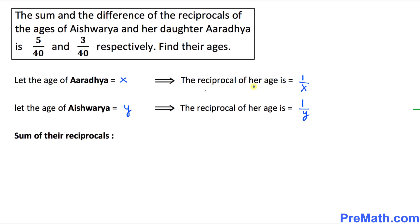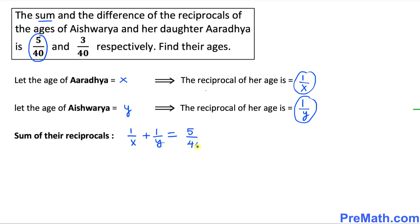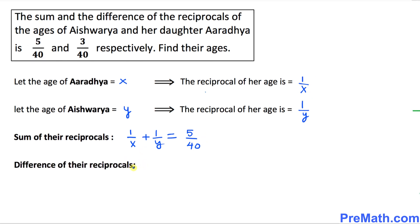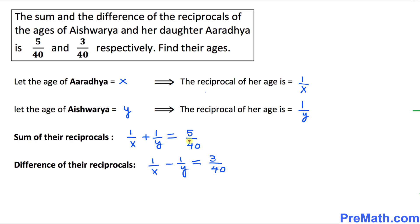The sum of the reciprocals means we simply add them: 1/X + 1/Y = 5/40. That is equation one. And the difference of their reciprocals gives us 1/X − 1/Y = 3/40. That is equation two.